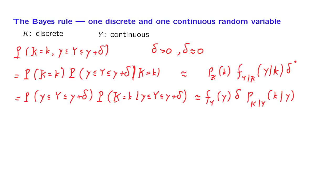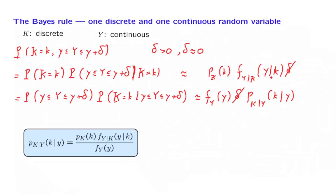We can cancel the deltas from both sides. We have that these two expressions are approximately equal, and this approximate equality becomes more and more exact as we send delta to 0. Since delta has already disappeared, we can set the two expressions exactly equal to each other. We then move one term to the denominator and obtain this version of the Bayes rule.